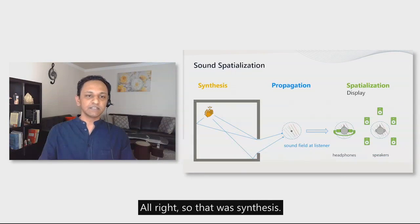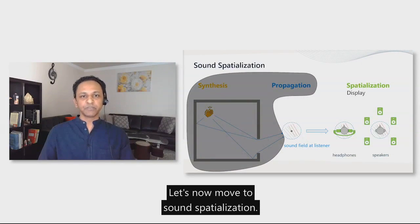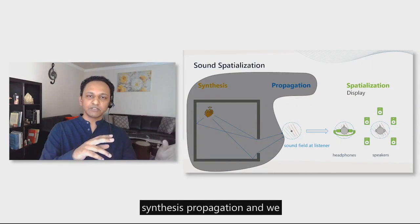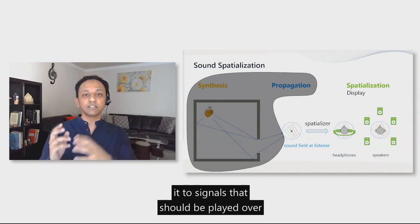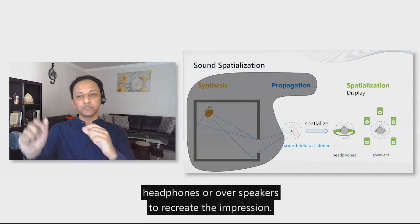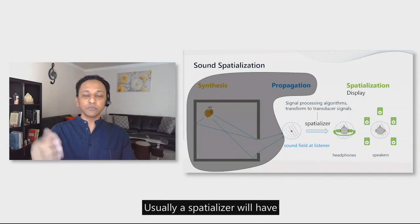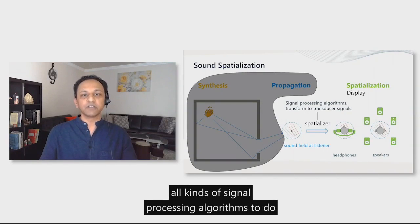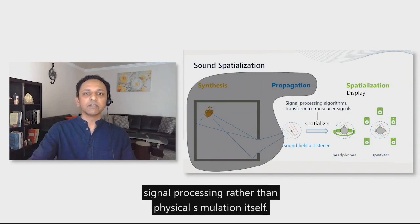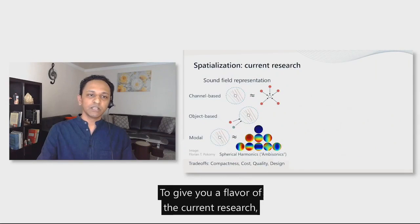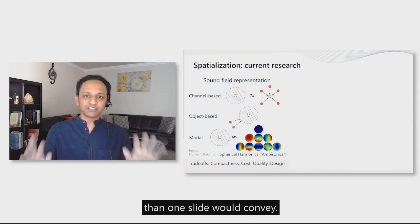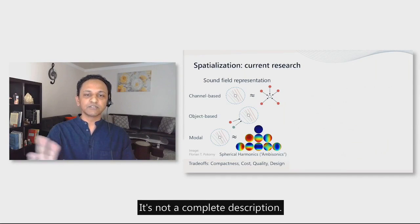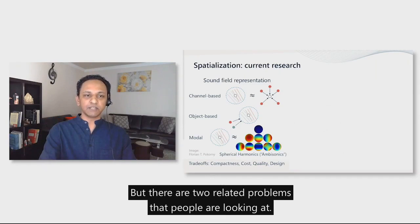That was synthesis. Let's now move to sound spatialization. Somebody did a simulation using synthesis propagation, and we know the sound field around the listener. It's the job of a spatializer to take that field and convert it to signals that should be played over headphones or over speakers to recreate the impression. Usually a spatializer will have all kinds of signal processing algorithms to do this transformation, and it's more heavy on signal processing rather than physical simulation itself. To give you a flavor of the current research, this is a much vaster area than one slide would convey, so I've just picked a few things here. There are two related problems that people are looking at.